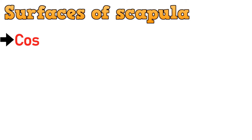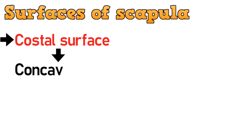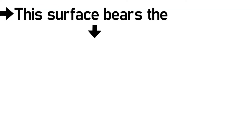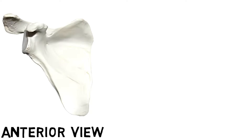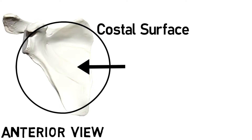Starting with the surfaces of scapula. The costal surface is concave and is directed medially and forwards. This surface bears the subscapular fossa. This is the anterior view of the scapula, and this is the costal surface facing the ribs. This depression which you can see is the subscapular fossa.